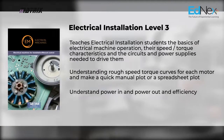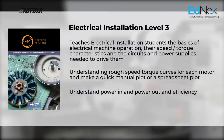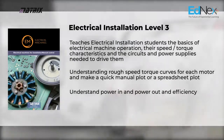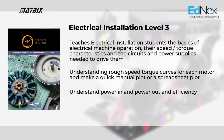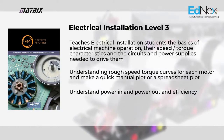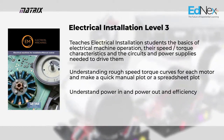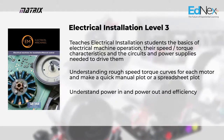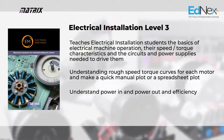Next you can see Electrical Installation Level 3. This teaches electrical installation students the basics of electrical machine operation, their speed torque characteristics and the circuit and power supplies needed to drive them. It teaches them to understand rough speed torque curves for each motor and make a quick manual plot or a spreadsheet plot, and also understand power in and power out and efficiency.